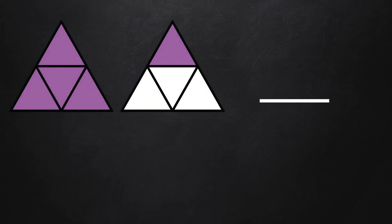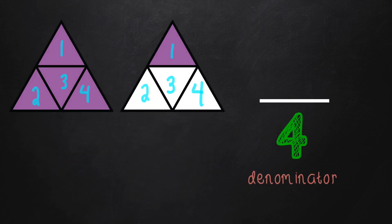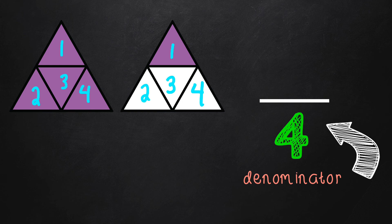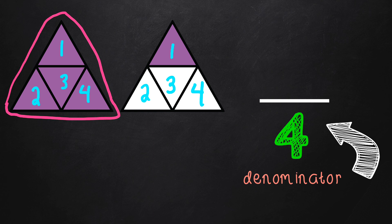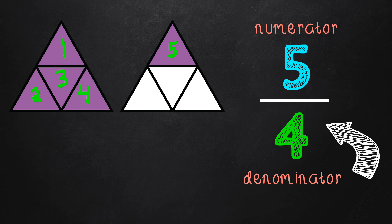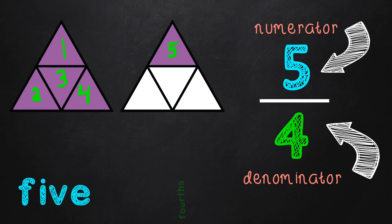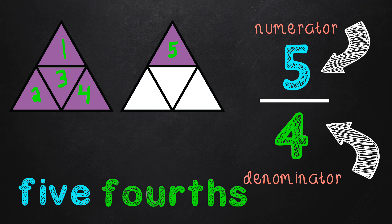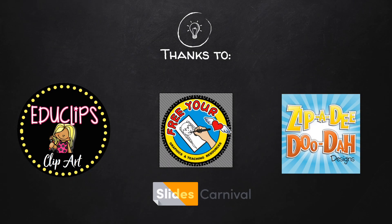We learned how to count fractions beyond or more than one whole. The denominator represents the number of parts each shape is divided into, and the numerator represents the total parts that are shaded in all of the figures. To read or write a fraction, start with the numerator first — five — and then the denominator. Since the denominator is four, we say the fraction's name is fourths, so the fraction would be five-fourths. Thanks everyone, have a wonderful day.